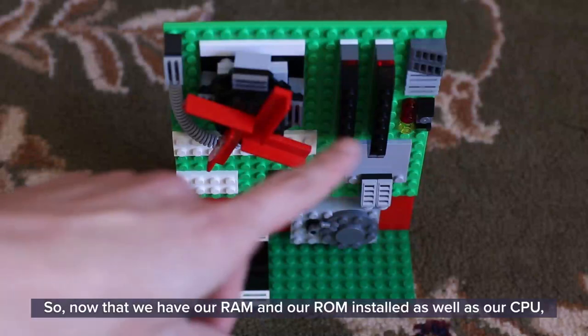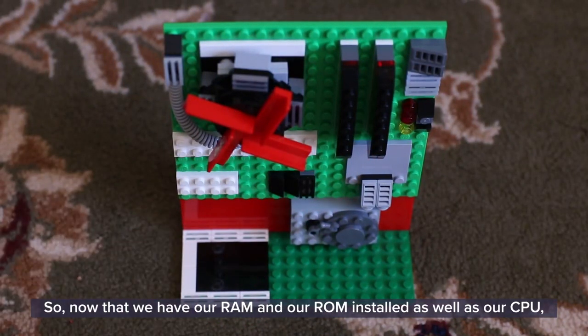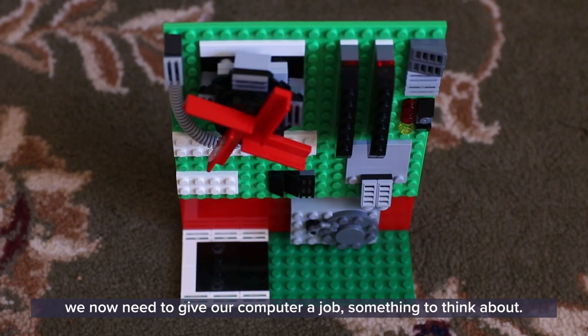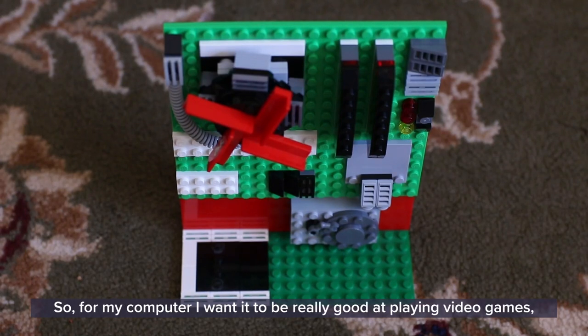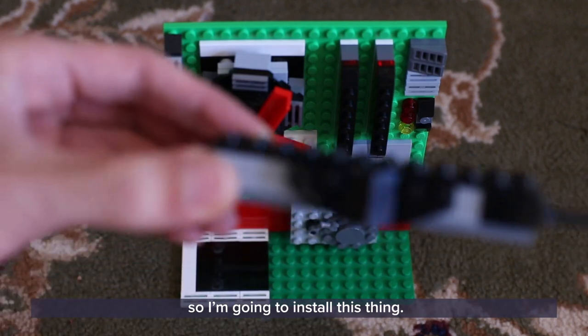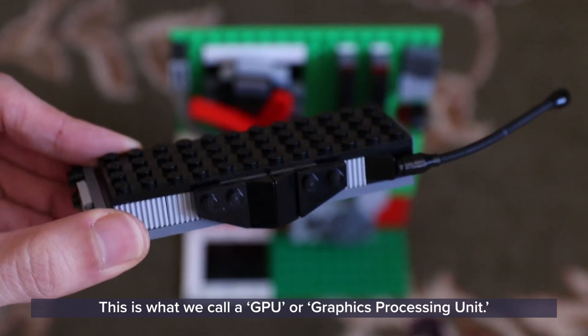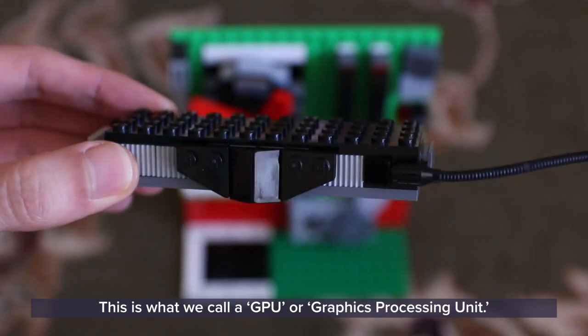So now that we have our RAM and our ROM installed, as well as our CPU, we now need to give our computer a job, something to think about. So for my computer, I want it to be really good at playing video games. So I'm going to install this thing. This is what we call a GPU, or a graphics processing unit.